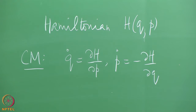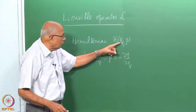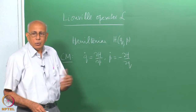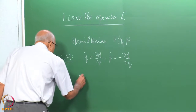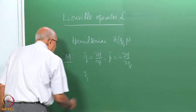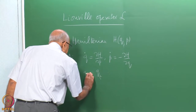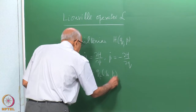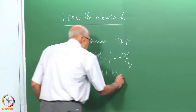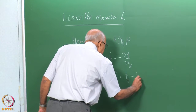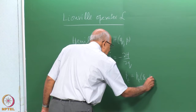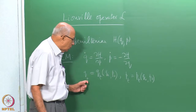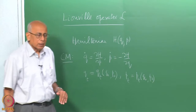In principle, if you specify the initial values of all the Q's and P's, one solves these equations to get the values of Q and P at any arbitrary instant of time. The solution would be Q(T) as some function of the initial values Q₀, P₀, and time itself, and similarly P(T) as a function of Q₀ and P₀.